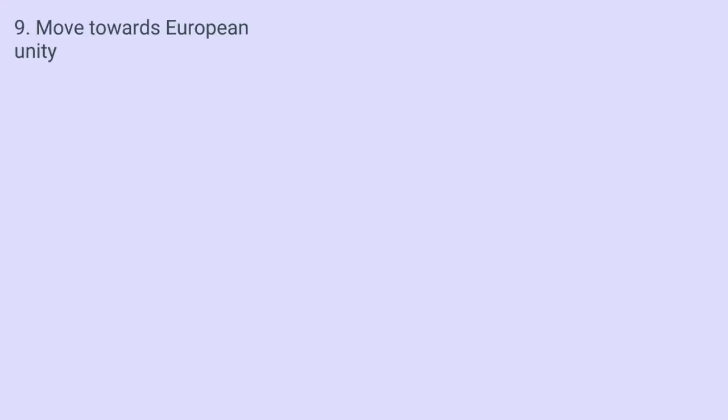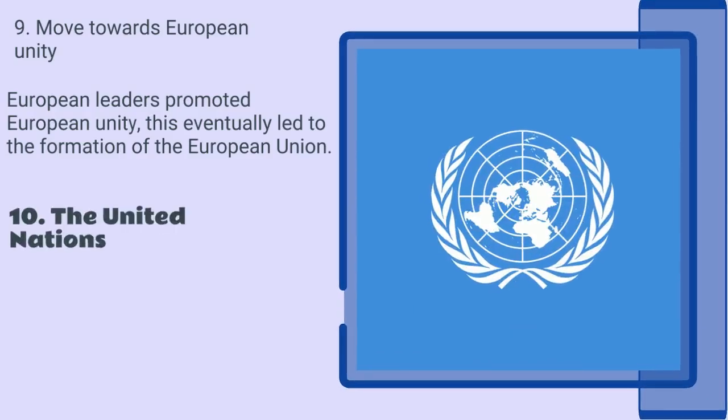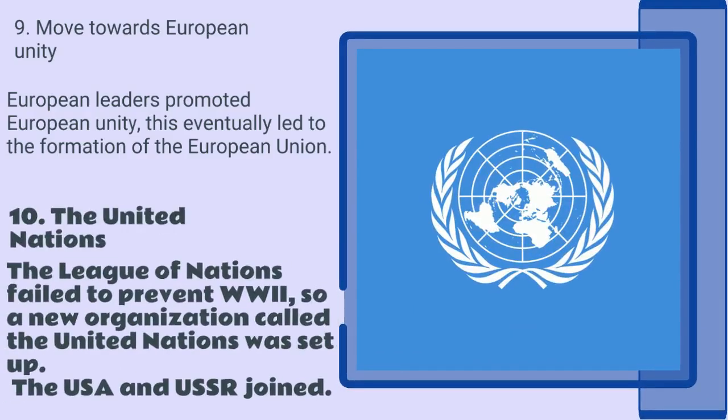In the aftermath of World War II, there was a move towards European unity. European leaders promoted European unity, and this eventually led to the formation of the European Union. A new organisation called the United Nations was also set up, and both the USA and the USSR joined.